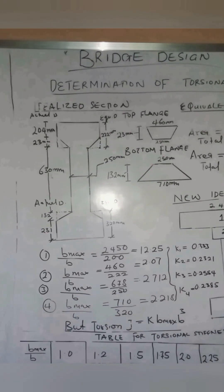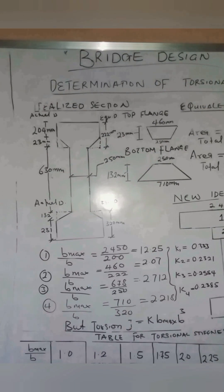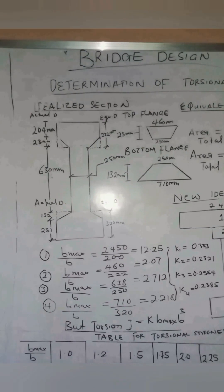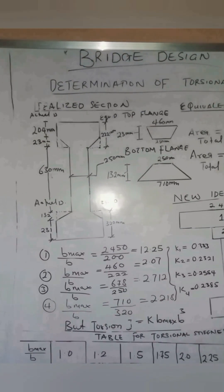The next stage is the determination of the torsional inertia of the composite section. The I-section has been idealized with dimensions: 204 mm, 23 mm, 630 mm (or 132 mm), and 231 mm. These are the actual dimensions of this I-section. At the base we have 710 mm, and the top is 460 mm.